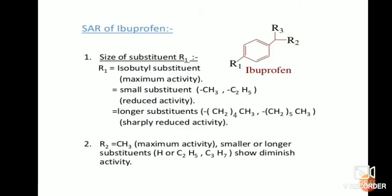Next is the structural activity relationship of ibuprofen. On the right side I have given the structure with three positions: R1, R2, and R3. We examine which changes affect activity. For the R1 position, if isobutyl substitution is present it produces maximum activity. Smaller substitutions at R1 reduce the activity.